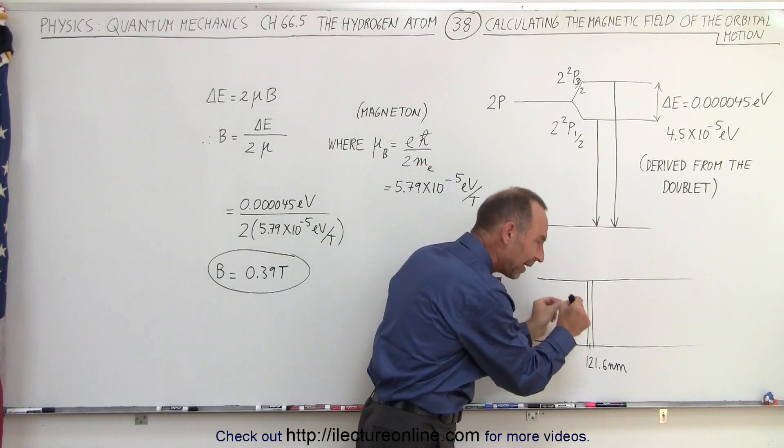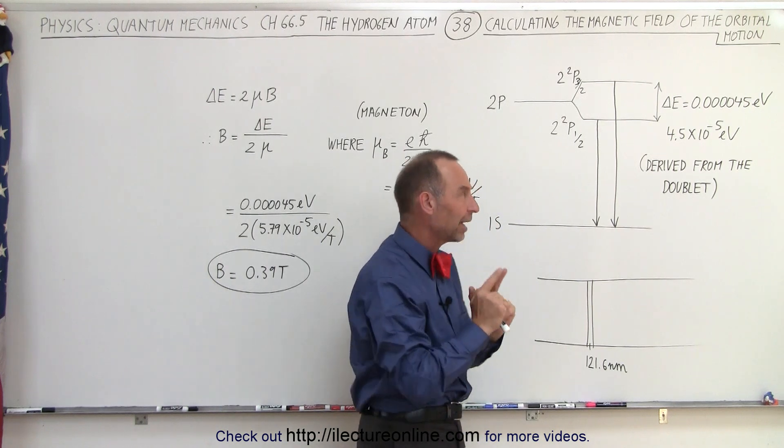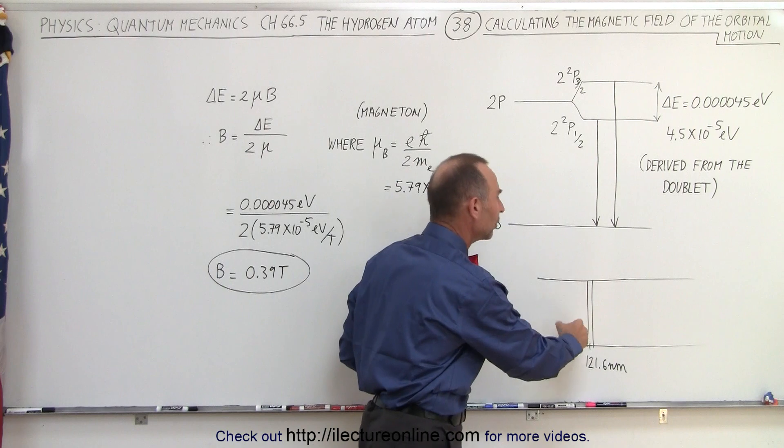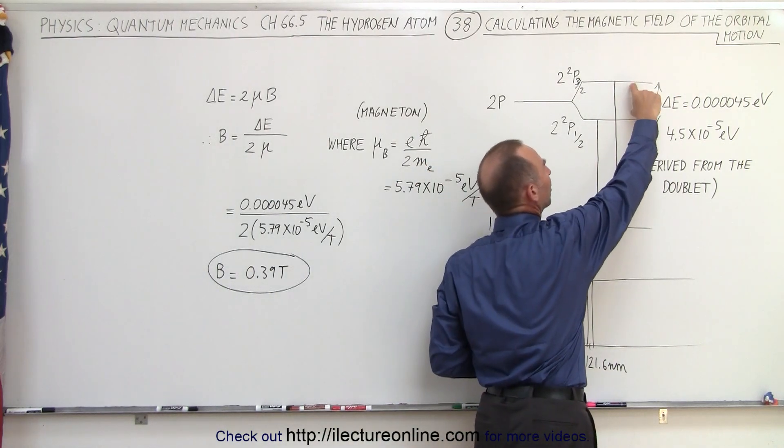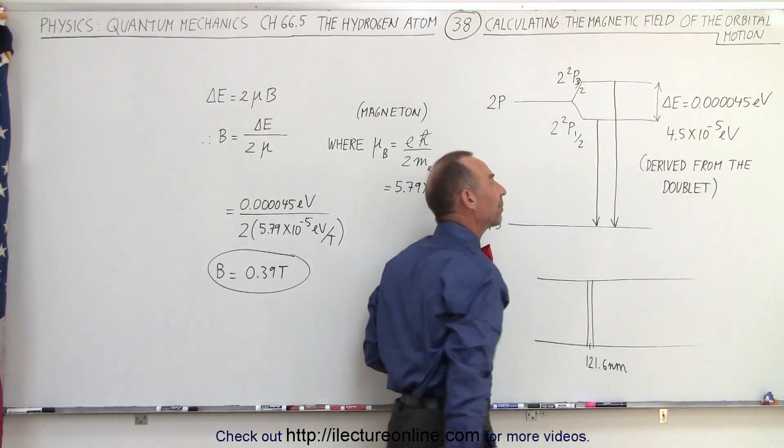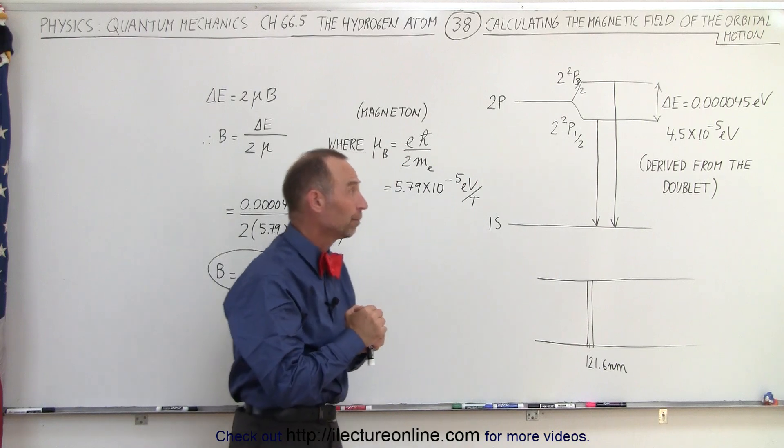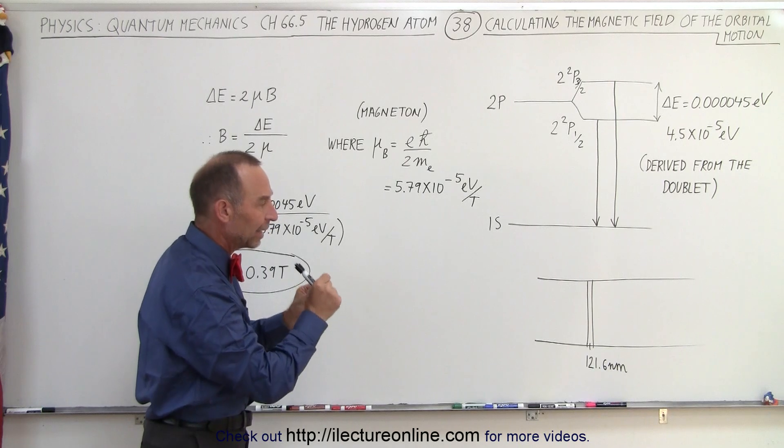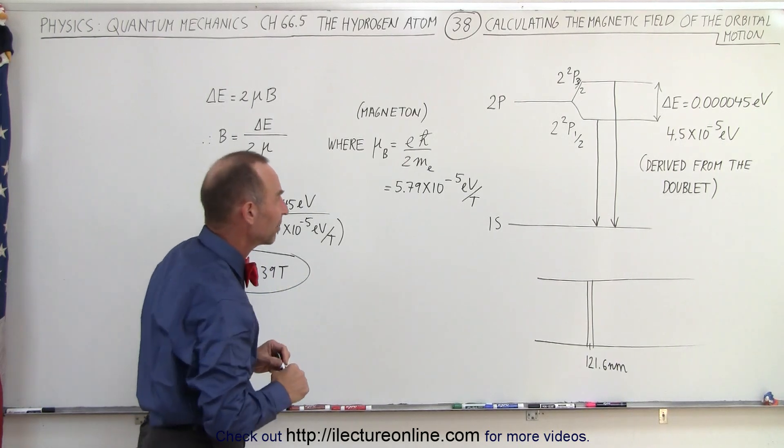They were able to see that very fine structure, the separation of those two lines very closely together. By calculating the energy of each of the two lines they were able to calculate the energy difference to be 4.5 times 10 to the minus 5 electron volts. So that was derived from exploring the doublet and calculating the energy of each of the two closely spaced lines.